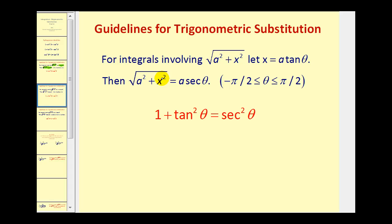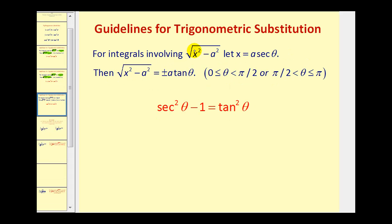The second form discussed in this video will be √(a²+x²). If this is the case, we let x equal a·tan(θ), which means √(a²+x²) will equal a·sec(θ). The third form, covered in the next video, will be √(x²-a²), where we let x equal a·sec(θ), and therefore √(x²-a²) will equal plus or minus a·tan(θ).